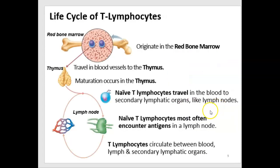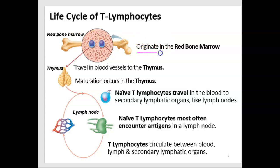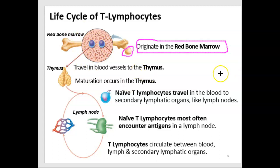Let's look at how T lymphocytes develop. This is the life cycle of T lymphocytes. They originate from hematopoietic stem cells in the red bone marrow — which in an adult would be the head of the femur versus the shaft.